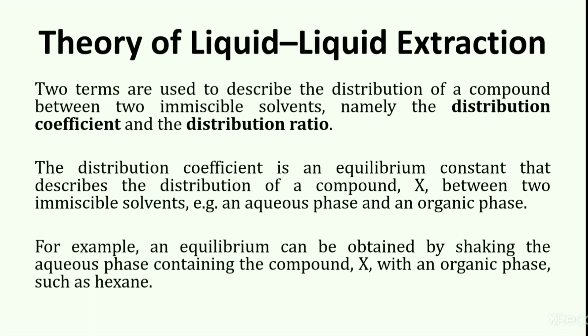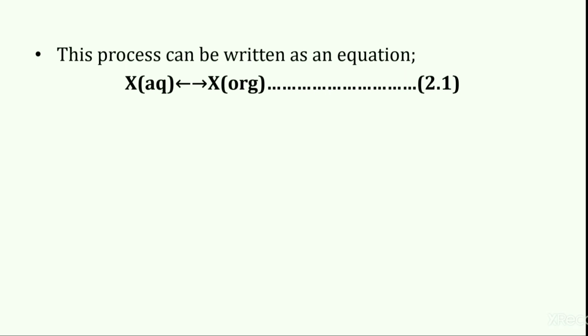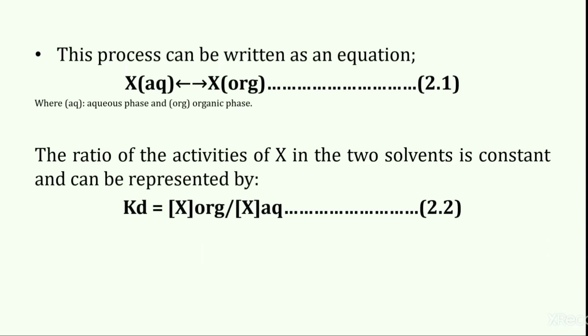After equilibrium condition, the net result of all external forces and movements acting on the system will be zero. The process can be written as equation 2.1, which denotes that at equilibrium the distribution of X between the aqueous and organic phases will be complete. The ratio of activities of X in the two solvents is constant and can be represented by equation 2.2: KD equals the molar concentration of X in the organic phase divided by the molar concentration of X in the aqueous phase, where KD is the distribution coefficient.